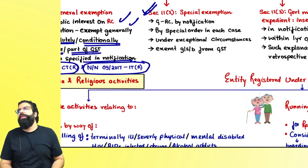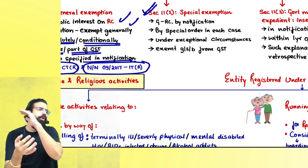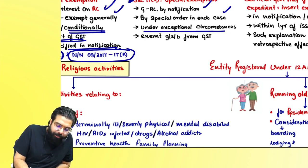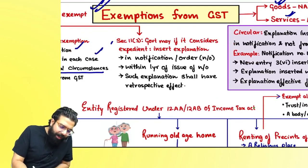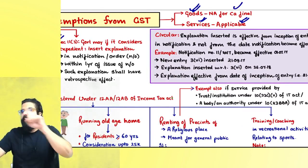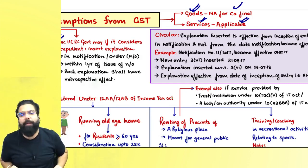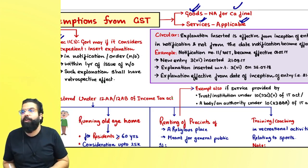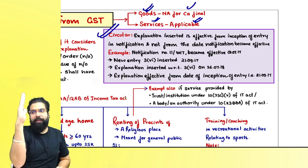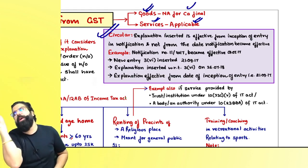Section 11(2) gives special power to the government — special exemption can be issued by special order. In each case, the government under exceptional circumstances can exempt something from GST. Section 11(3) gives the government the power to issue an explanation in a notification or order. If the government inserts an explanation within one year, that explanation will have retrospective effect. But if the explanation is inserted after one year, it will have prospective effect only — not retrospective.